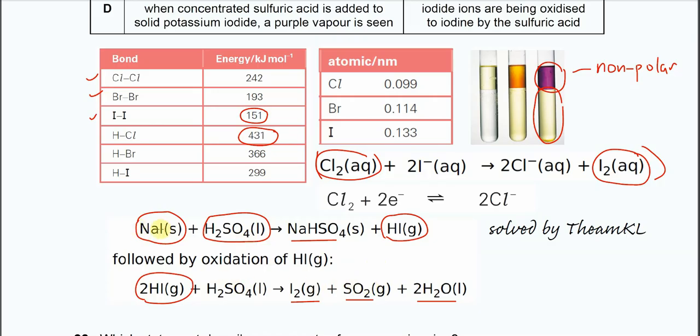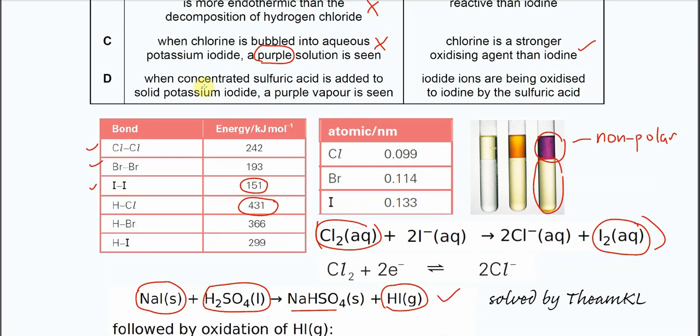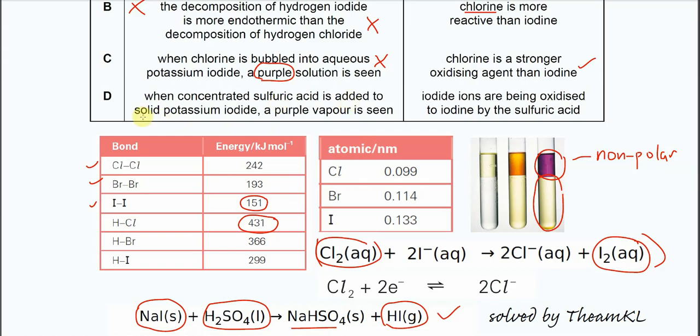Again, so when this sodium iodide reacts with concentrated sulfuric acid, first it will form HI, and HI will oxidize by the H2SO4, and iodide is now oxidized to iodine, and the sulfate is now reduced to the sulfur dioxide. So this is a redox reaction. Now, for this one, when the concentrated sulfuric acid is added to solid potassium iodide, purple vapor is seen. Yes, because iodine is formed. This is correct.